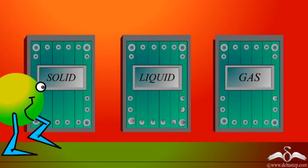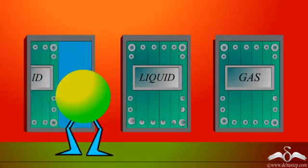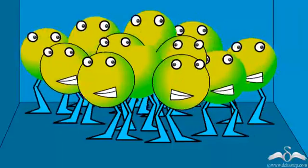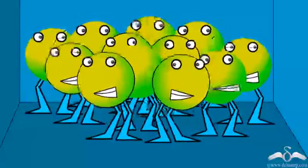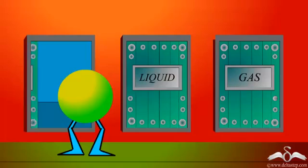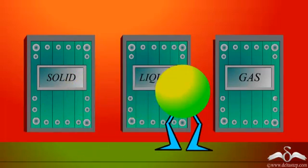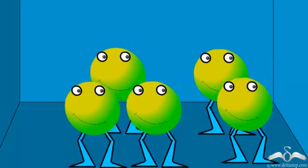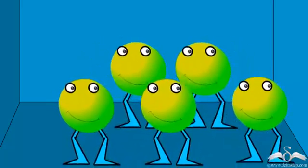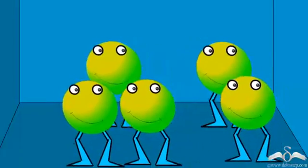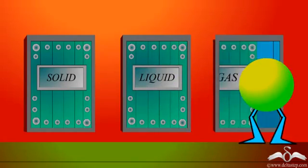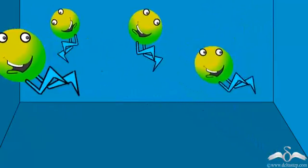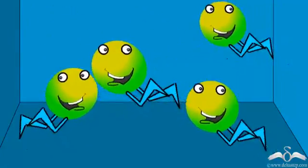He first goes to his friends in the solid state. He sees that the molecules are packed together very tightly and they vibrate about the mean positions. He is not happy. He then sees his friends in the liquid state, where the molecules are able to move and are not as close to each other as in the solid state. And in the gaseous state, he observes that the molecules are freely moving in the room, very far apart from each other, and so he happily joins them.